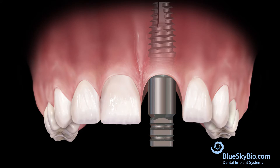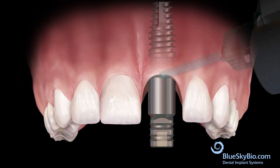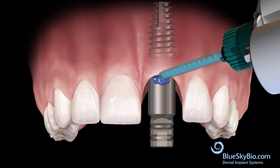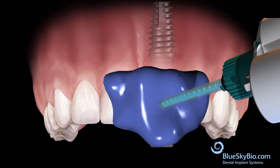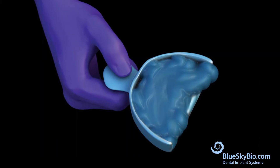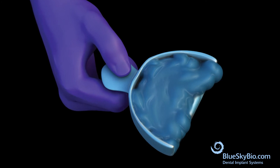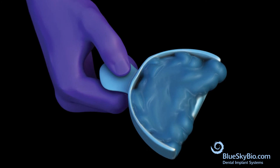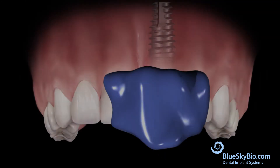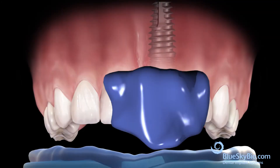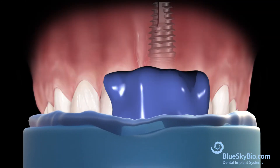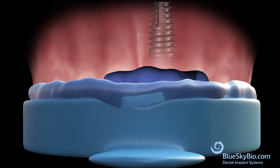Fill the top of the screw head with wax to prevent impression material from flowing into the head of the screw. Inject medium body impression material around the multi-purpose abutment, then inject medium body impression material into an impression tray.